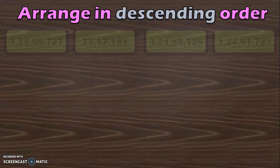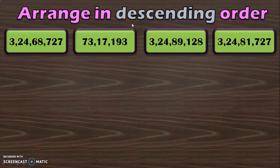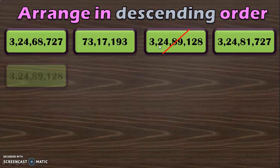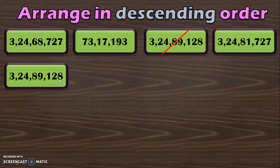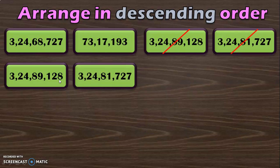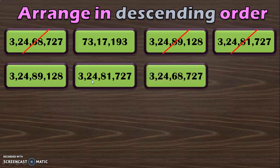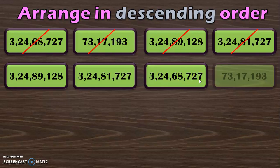Now let us do sums for arranging in descending order. Descending means arranging from big to small. We will first identify the biggest number of this series. You have three 8 digit numbers and one 7 digit number. We need the biggest number, so look at the 8 digit numbers and using the rules applied so far, write down the biggest number and strike it out first. So we have 3 crore 24,89,128 to be the biggest number. The next biggest number will be 3 crore 24,81,727, which is smaller than this but bigger than 3 crore 24,68,727. The smallest number of the series will be 73,17,193.